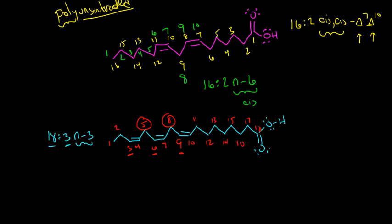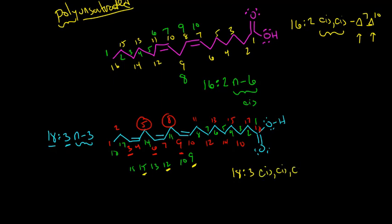Let's name this using the chemical convention, starting from the carboxylic acid end. Counting from carbon 1 at the carboxylic acid through to carbon 18, the double bonds fall on the 9th, 12th, and 15th carbons. So we would name this 18:3, cis, cis, cis, delta-9, delta-12, delta-15.